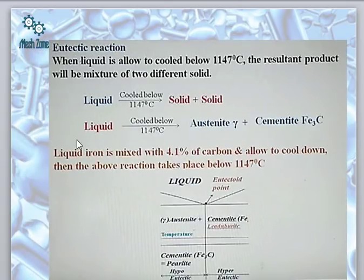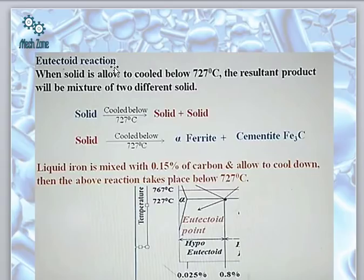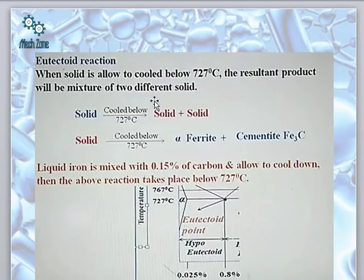The eutectic reaction means that when a liquid containing 4.1 percent carbon is cooled, two solid phases are obtained: gamma austenite and cementite (Fe₃C). So a liquid upon cooling becomes two solid phases. The eutectoid reaction occurs when iron containing 0.8 percent carbon — already in the solid state — is cooled, and the resulting product is a mixture of two solids: alpha ferrite and cementite (Fe₃C).